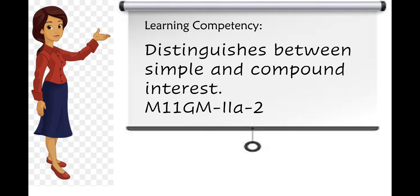Let us review simple interest from our previous lesson. It's an interest that is computed on the principal and then added to it. The formula for finding simple interest is I sub S is equal to PRT, where I sub S is simple interest, P is the principal, R is the rate, and T is time or term in years.